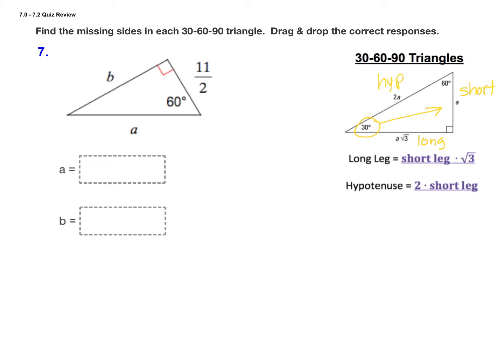In my first triangle here, notice how we have the 60 and the 90 marked, so this angle must be 30 degrees. Going directly opposite that 30, we have our short leg, which is 11 over 2.